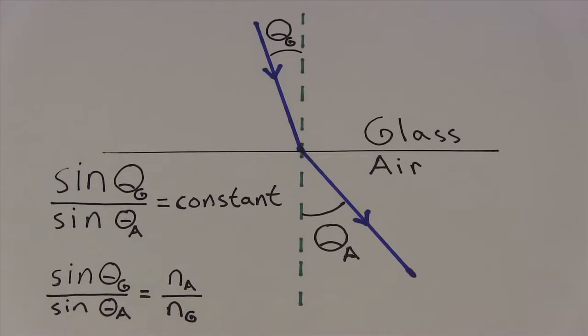We now know this is a form of Snell's Law, where the ratio of the sines of the angles is equal to the inverse ratio of the refractive indices of the materials, where the refractive index of the material is related to how fast light propagates through it.